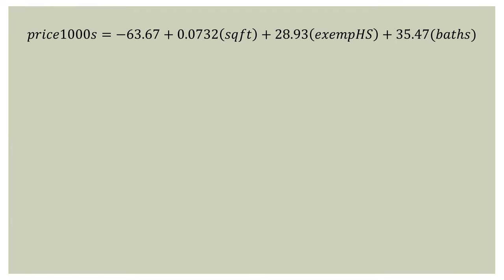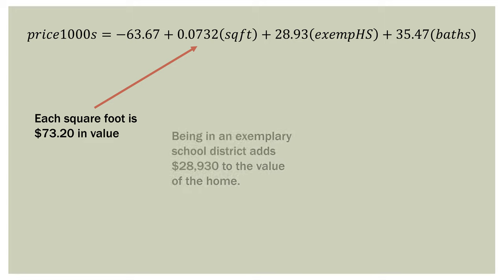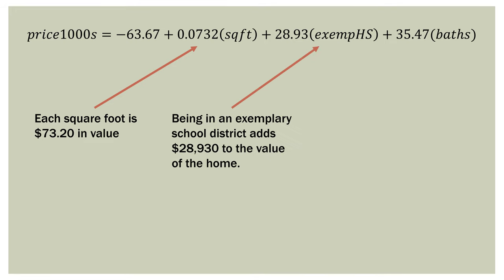All right, so remember how this model did for my own house. Here's our regression equation with our three variables in it. Each square foot is worth $73.20. We have to multiply everything by a thousand to get the actual dollar value. So each square foot is worth $73.20. Being in an exemplary school district adds $28,930 to the value of the home. That's because exemplary high school is an indicator variable. It's either one or zero. So if it's a one, it adds 28,930 to the value of the home. And then each bathroom adds $35,470 to the value of the home. That's just a regular number.